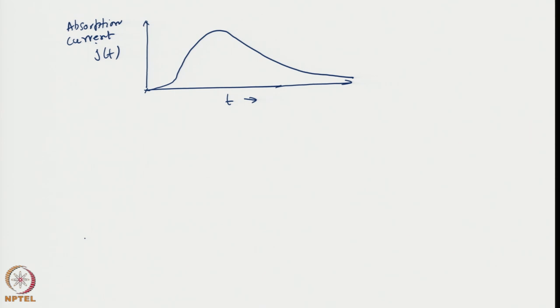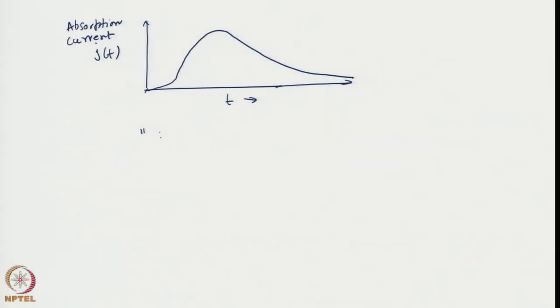This way of looking at it — that an absorber is basically a counter — an absorbing barrier keeps account of the very first visit that the random walker has made. Since there is no return, this concept is now adopted in defining what is called the first passage time distribution.